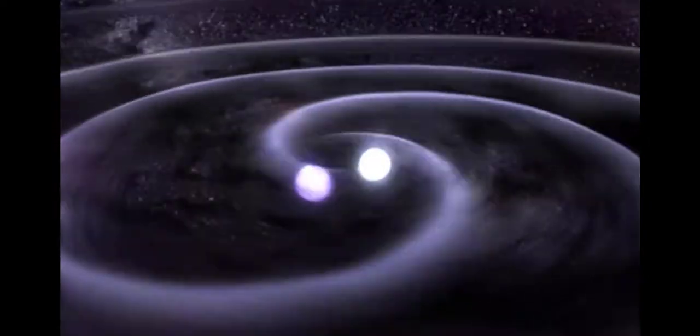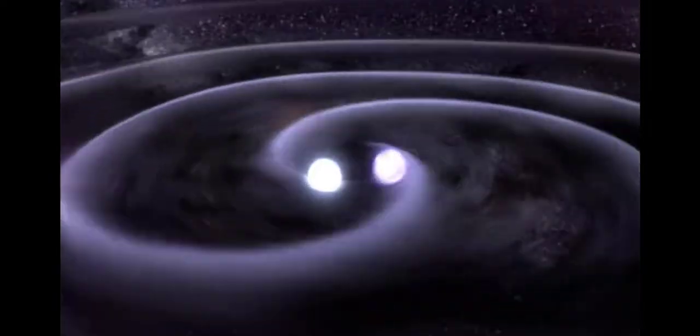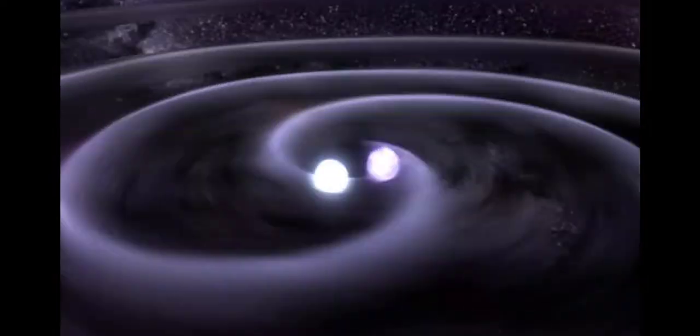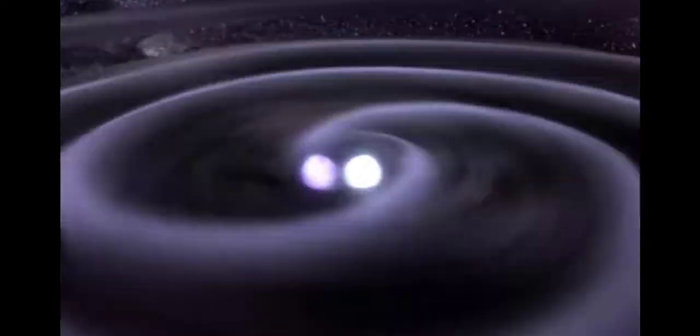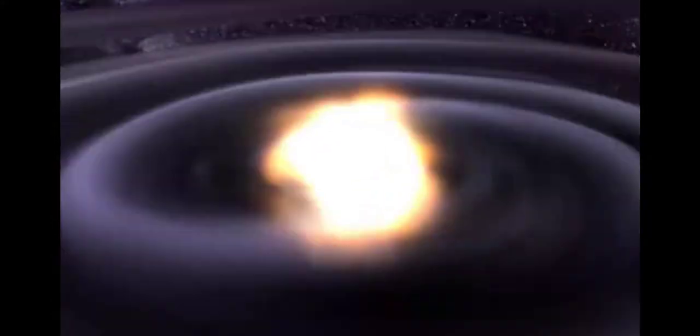This merger results in a burst of gravitational waves, and a brief but intense burst of gamma radiation, which is an electromagnetic wave. The result of the merger is a new, more massive neutron star.